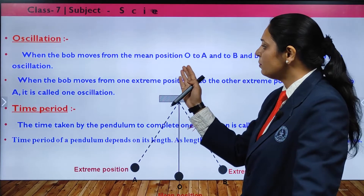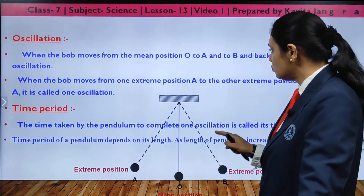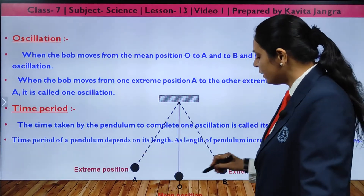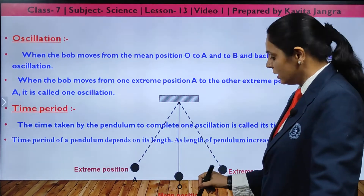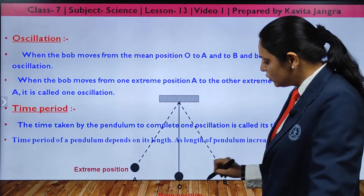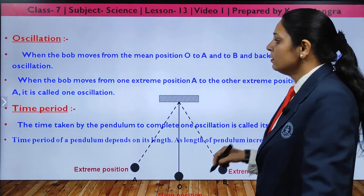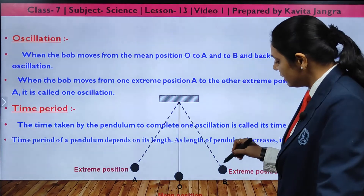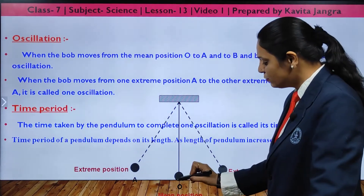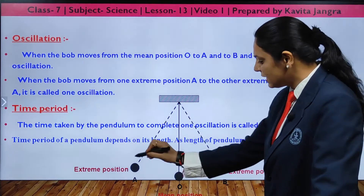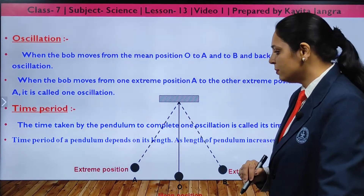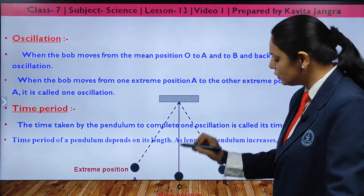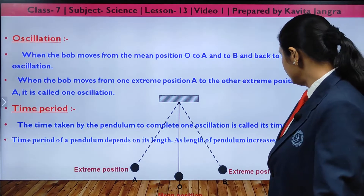One oscillation is when the bob moves from the mean position O to one extreme A, then to the other extreme B, and back — completing one full cycle. This can be counted from the mean position or the extreme position. The time taken to complete one oscillation is known as the time period of the pendulum. The length of the pendulum is measured from the suspension point to the center of the bob.